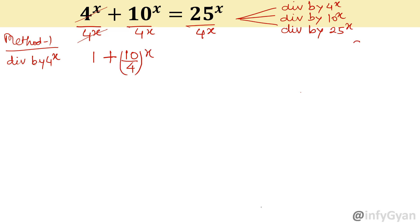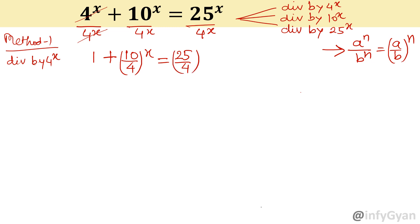How? By the property of exponent: (a over b) can be written as (a over b) power n. So now I will write (10 over 4) whole power x by the same property. Similarly, I will write the right hand side as (25 over 4) whole power x.